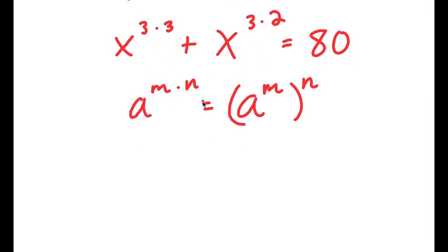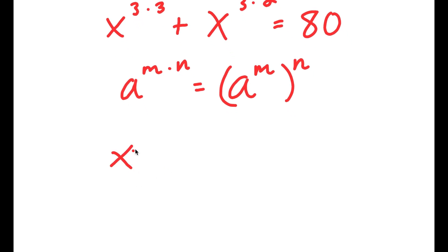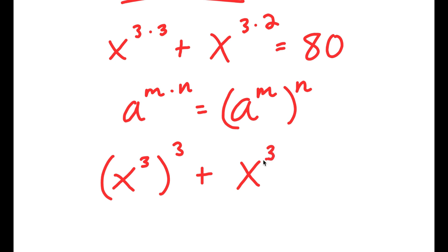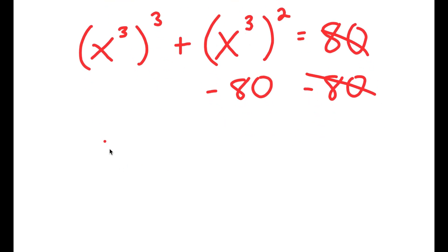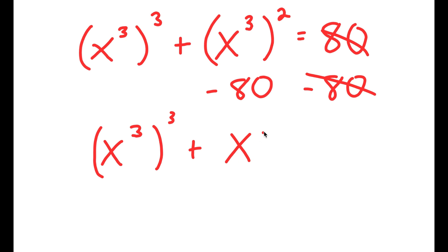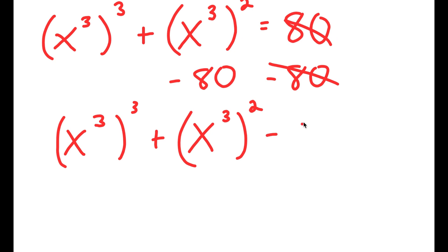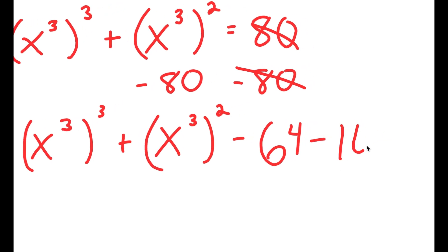So x to the power of 3 times 3, I can rewrite that as x to the power of 3 to the power of 3, plus x to the power of 3 times 2, which I can rewrite as x to the power of 3 to the power of 2, and this is equal to 80. Now I'm going to subtract 80 on both sides, so these two cancel out and I get x to the power of 3 to the power of 3 plus x to the power of 3 to the power of 2 minus 64 minus 16 is equal to 0.